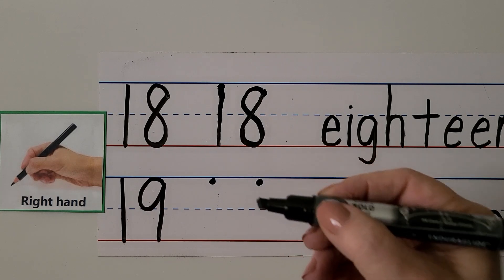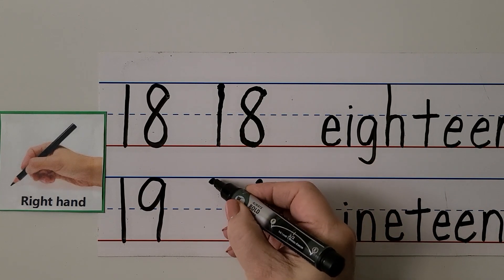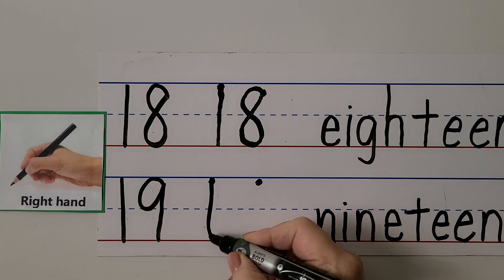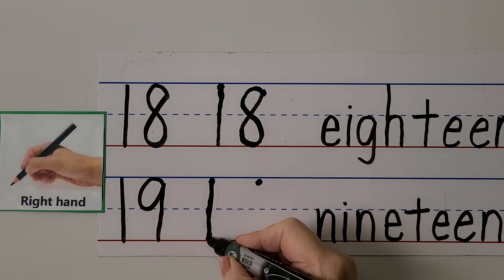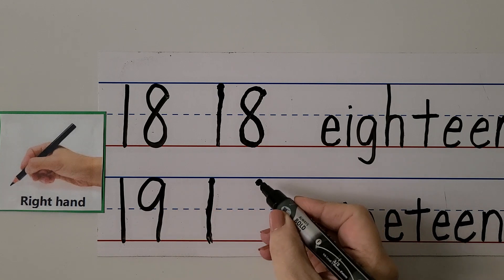We can write the number 19 with our right hand. We start here and we make a 1, go all the way down to the top line. Mine's a little crooked. I'm gonna put a 9 right next to it. I'm gonna go around and up to make a ball and straight down. 19.